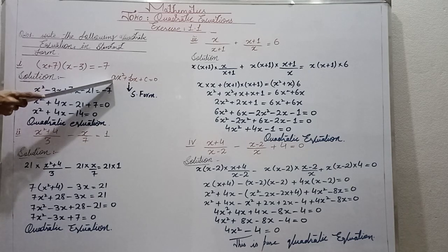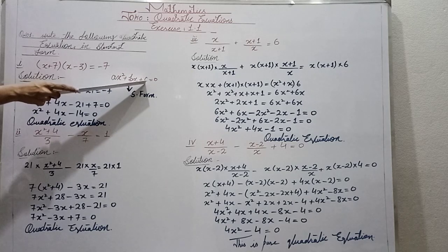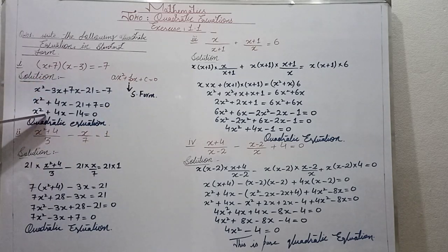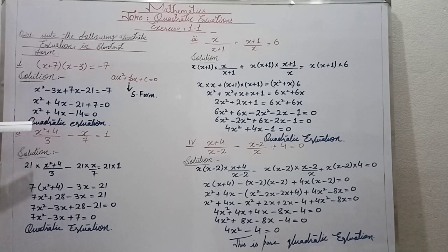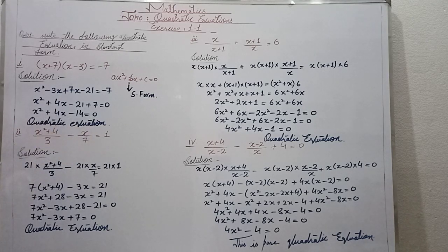Here, a is the coefficient, x is the variable; b is the coefficient, x is the variable; and c is the constant value equal to 0. The coefficient of x squared is 1 because there is no explicit coefficient. So the quadratic equation is x squared plus 4x minus 14 equals 0. We have converted it to standard form.